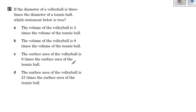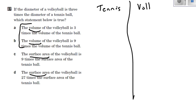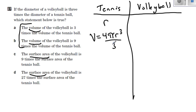Question 27. If the diameter of a volleyball is three times the diameter of a tennis ball, which statement below is true? Two of the statements involve volume and two of them involve surface area. So let's talk about volume first. Here's the tennis ball and here's the volleyball. If the radius of the tennis ball is r, then the volume is 4 pi r cubed divided by 3.